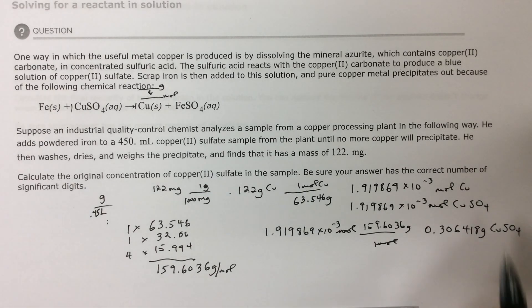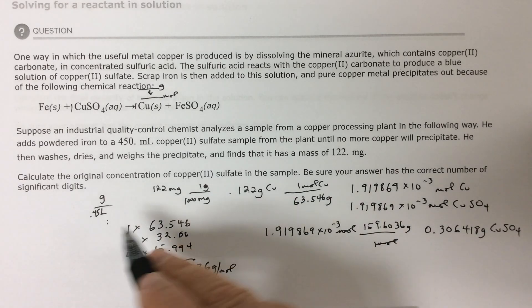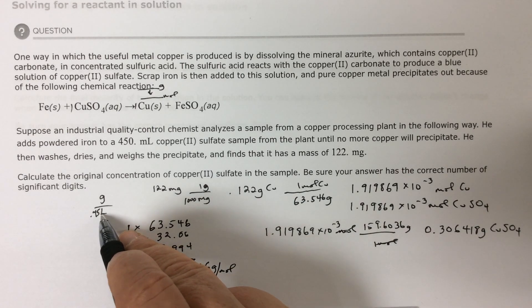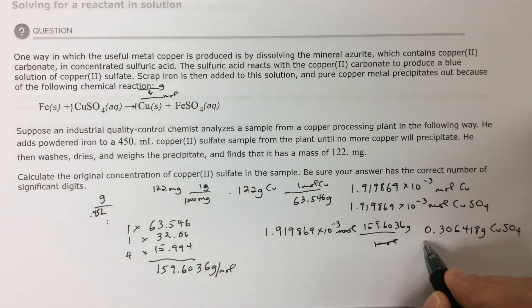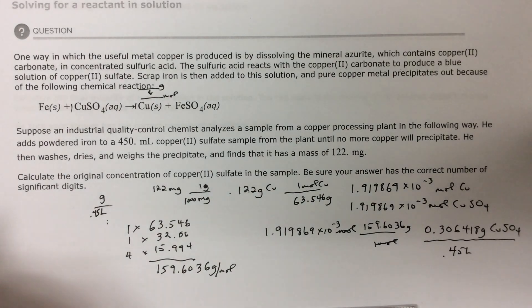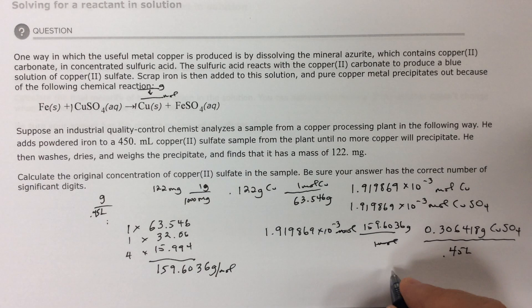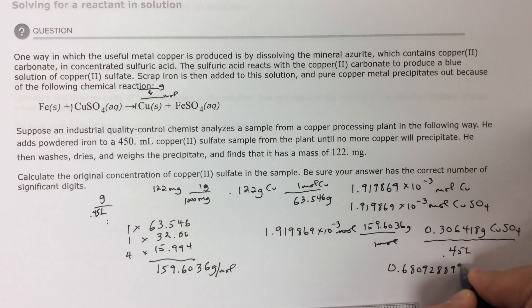So I'm almost finished. I've got grams. I have 0.45 liters. So I'm going to just take this number of grams, I'm going to divide it by 0.45 liters of solution. And I should have 0.68092889 grams per liter.